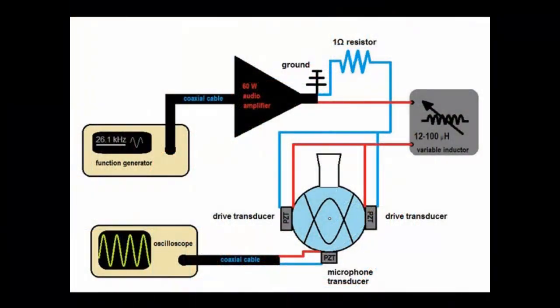This is a schematic of the experimental setup. The function generator provides the ultrasonic frequency, which gets amplified by an ordinary audio amplifier. The signal drives the piezoelectric transducers glued to the flask. They're kind of like speakers. The transducer on the bottom acts as a microphone to measure the amplitude of the flask's response.